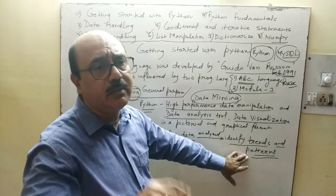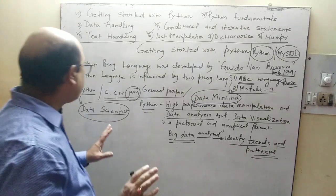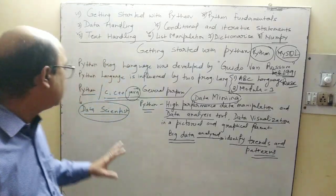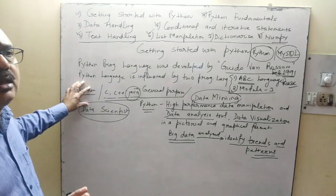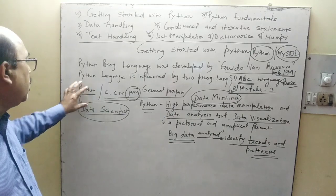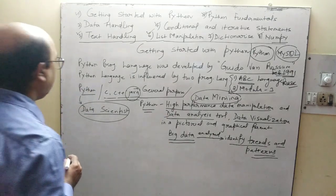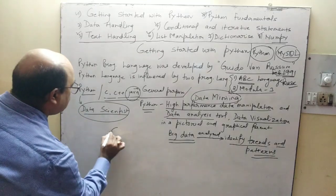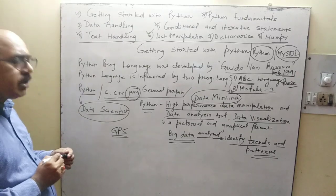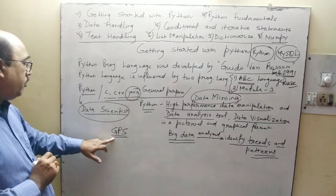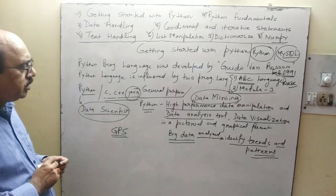C++ और Java general purpose language हैं, लेकिन Python general purpose language नहीं है — यह सब programs के लिए fit नहीं है। Python के लिए बहुत successful programming का example है GPS system। GPS system net-separated होता है और Python में successfully coding किया गया है।